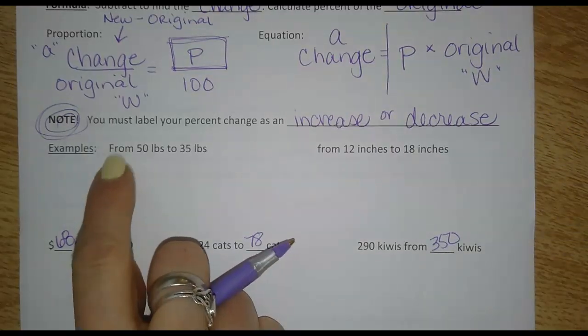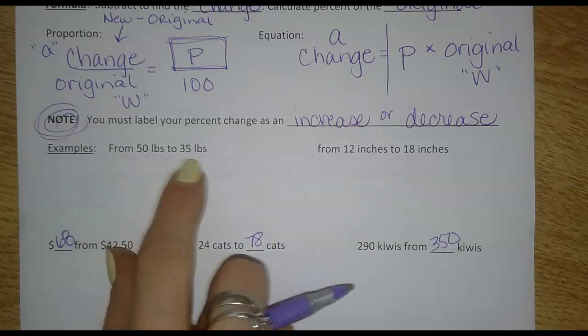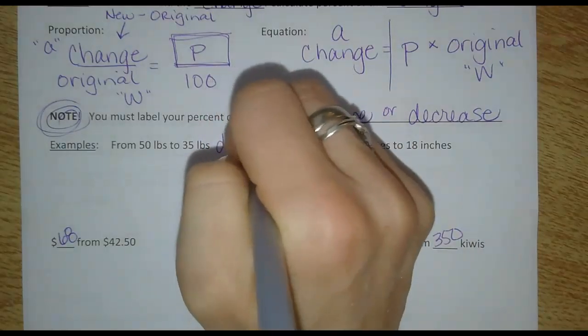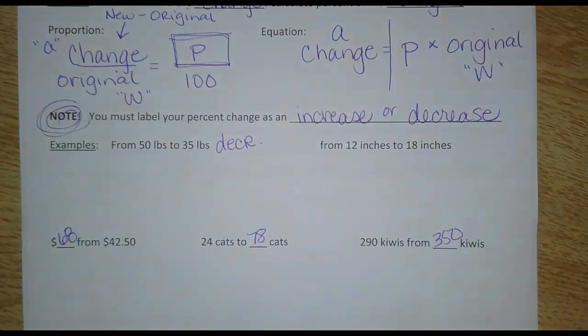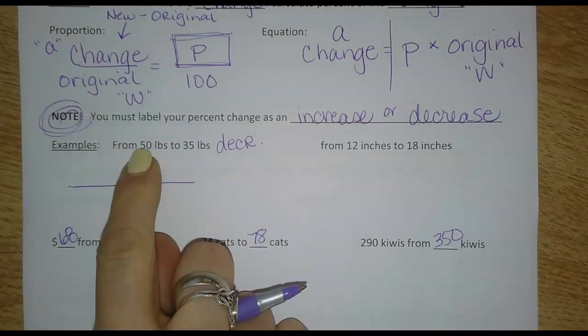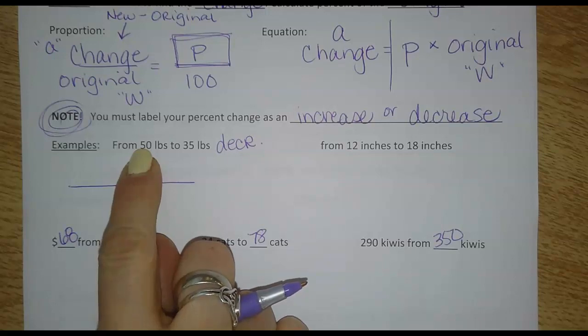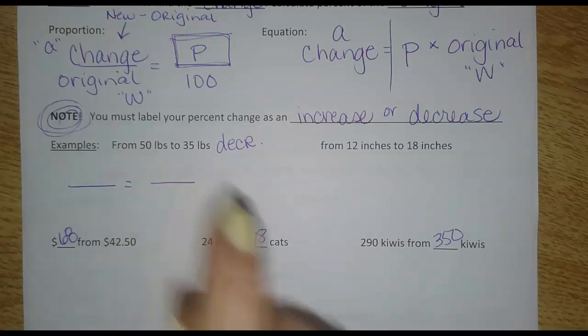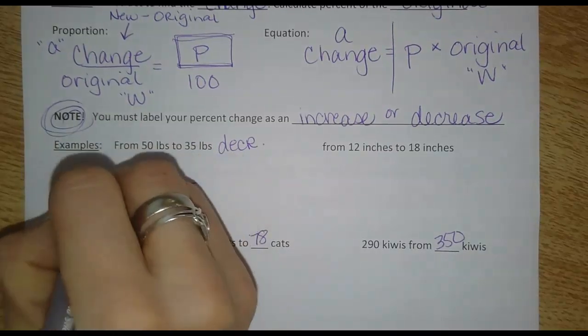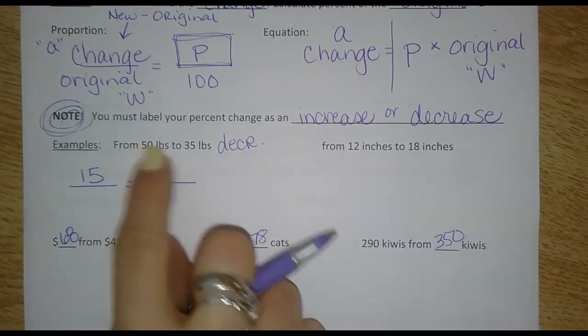Here we go. If something goes from 50 pounds to 35 pounds, well, because that went down, that would be a decrease. So we know it's a percent decrease, but let's find out what percent decrease. I'll do this one as the proportion. So I want to figure out how much it changed. I could type in 50 minus 35 or go over to the side and do it. So it changed, it went down by 15 pounds.